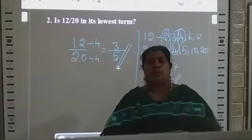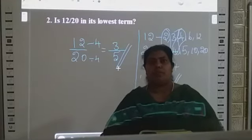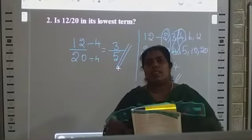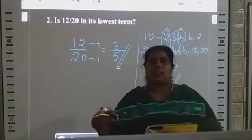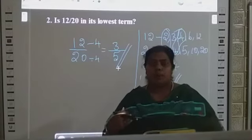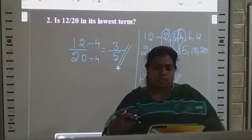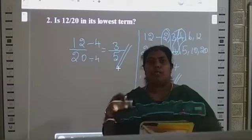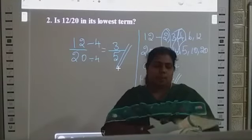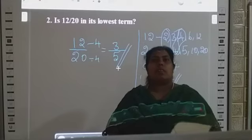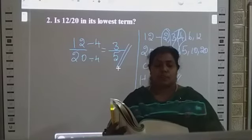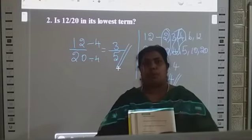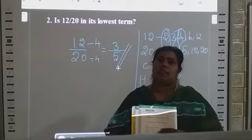Now you know how to find an equivalent fraction, how to check equivalent fractions, and how to reduce fractions to lowest terms. Your homework is Exercise 6.1 on page number 17 — finding an equivalent fraction — and Exercise 6.2 on page number 72. Please try to complete those two homeworks. If you have any doubt, please contact me.